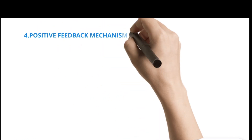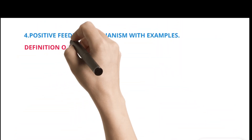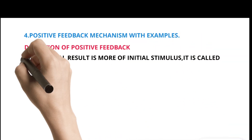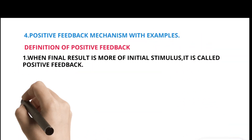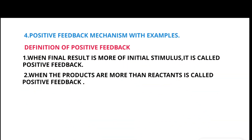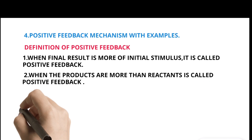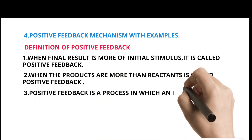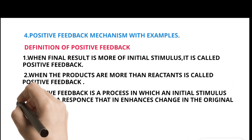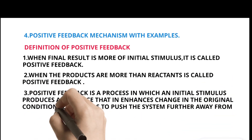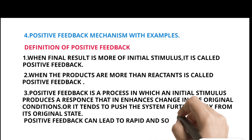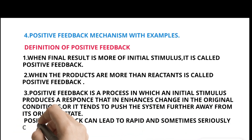Positive Feedback Mechanism with Examples. Definition of Positive Feedback: When the final result is more than the initial stimulus, it is called positive feedback. When the products are more than reactants, it is called positive feedback. Positive feedback is a process in which an initial stimulus produces a response that enhances change in the original conditions, or it tends to push the system further away from its original state. Positive feedback can lead to rapid and sometimes serious changes.